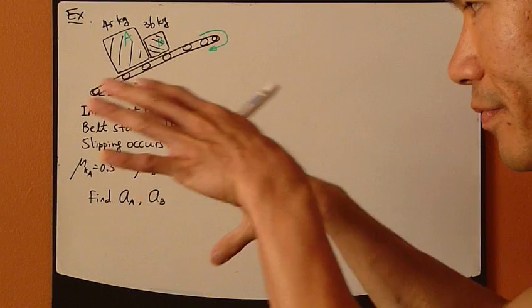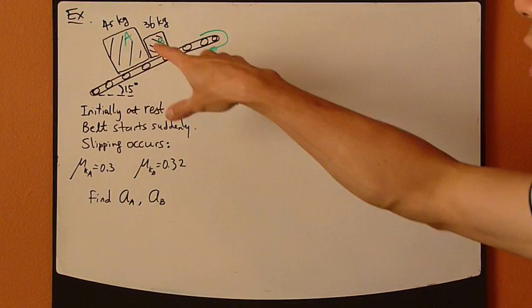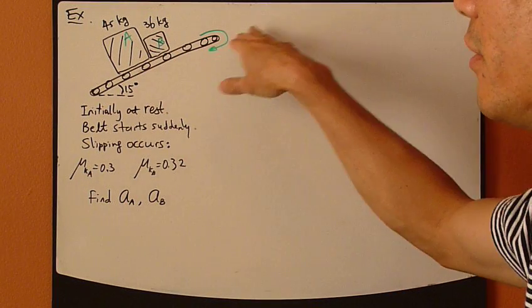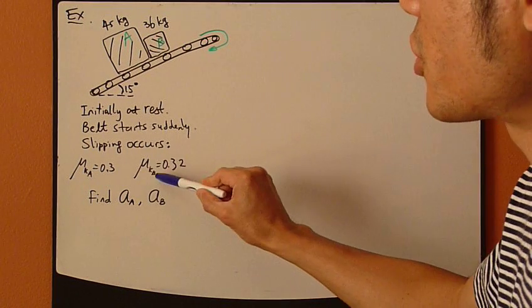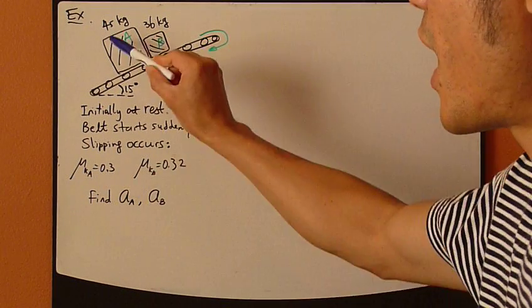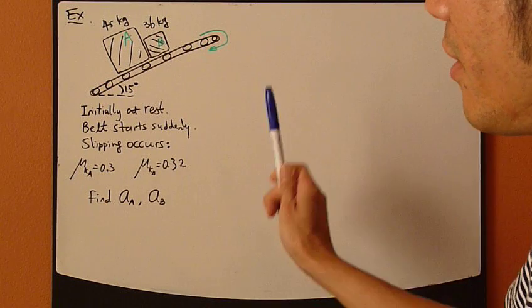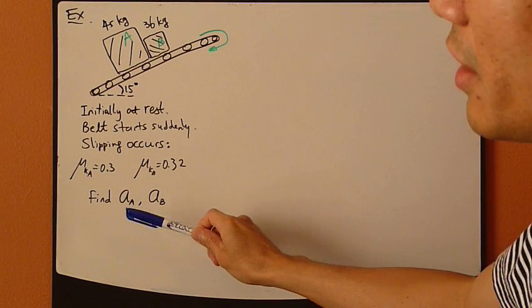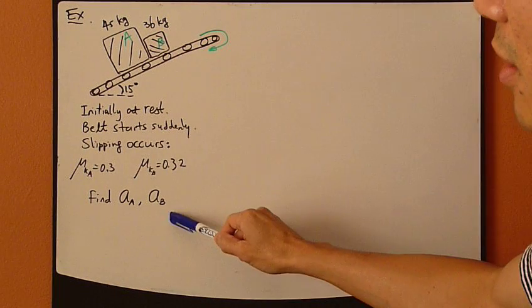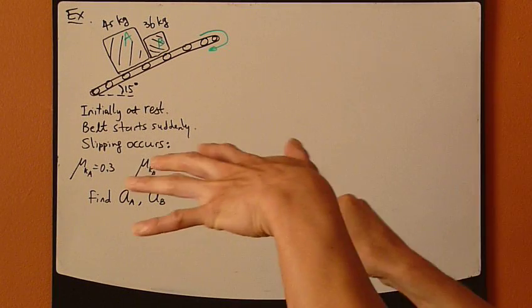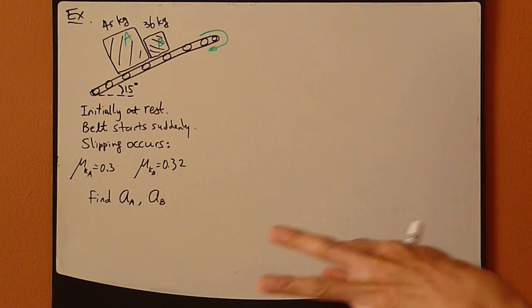So it will slip, and there's a relative motion between the boxes and the conveyor belt. Now the kinetic coefficient functions are given for A and B. You're asked to find the initial acceleration for A and B before the slipping occurs. Alright, so initially slipping occurs.